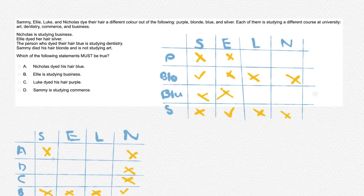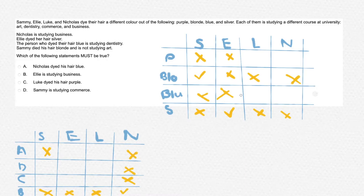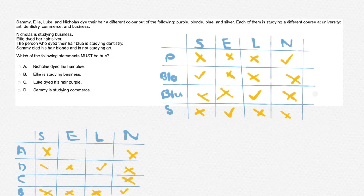Keeping in mind that the person who dyed their hair blue is studying dentistry, we know this cannot be Nicholas as we have already found out that he is studying business. So now we know Nicholas's hair cannot be blue — it must be purple. Tick that in Nicholas's section and cross out blue. That leaves Luke with having blue hair, meaning he is also the dentist. We can tick this in our other table and cross out other possible options. That leaves Sammy with studying commerce, and by crossing out commerce for Ellie, we know Ellie is studying art.